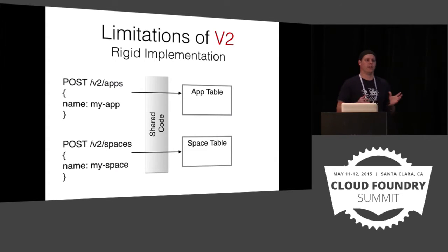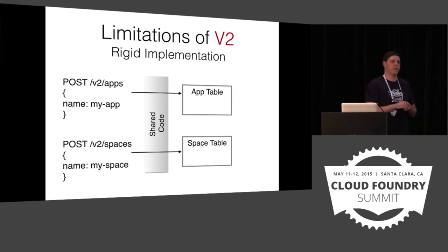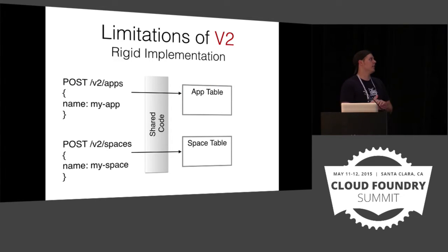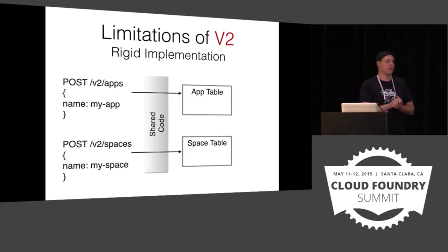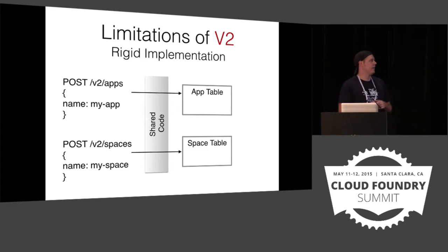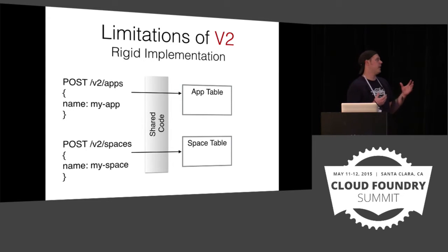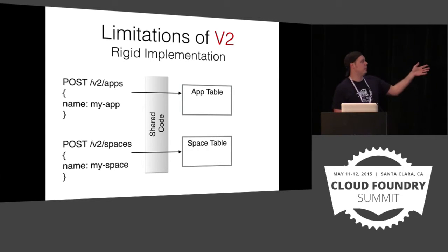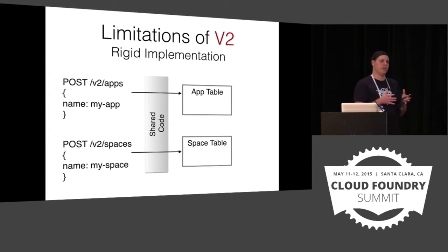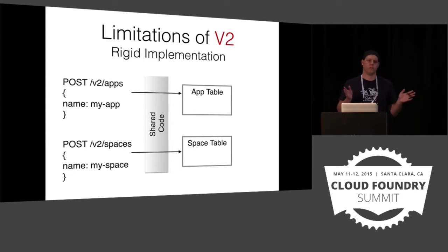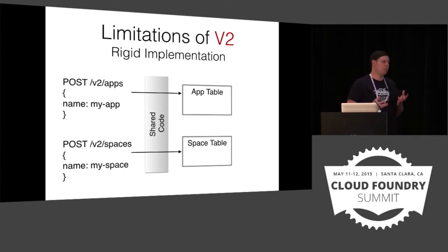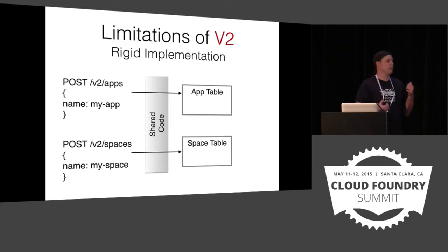Maybe we could hide that under the hood — just move some data around and everything will be great. But we have another limitation: a rigid implementation in our Cloud Controller code base. We take advantage of some Ruby metaprogramming where there's a very tight coupling between an API request and a database table. When you're making API requests — for example, a V2 app endpoint or a V2 spaces endpoint — there's some metamagic directing them to a table. Because of that, there are a lot of assumptions about what the table structure looks like, so we don't have a lot of room to maneuver.